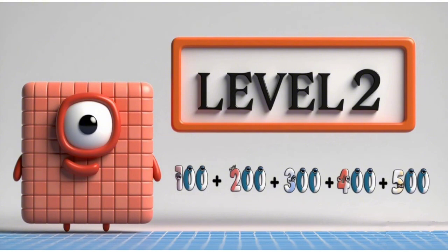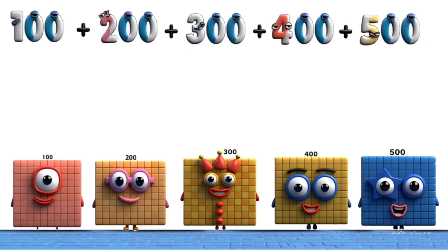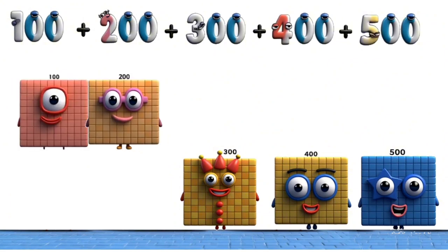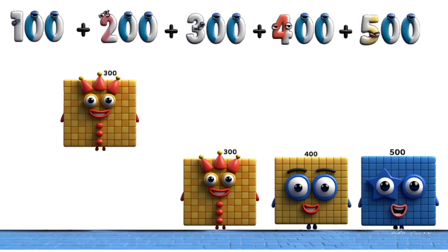Level 2. Number Blocks 100 plus 200 to 500. 100. 100 plus 200 equals 300.